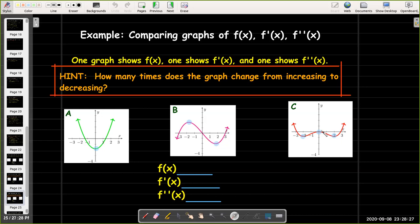Why is that important? Every time the graph changes from increasing to decreasing or vice versa, the slope of the tangent line has to pass through zero, meaning the derivative must equal zero at those points.